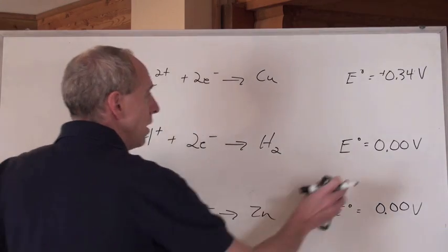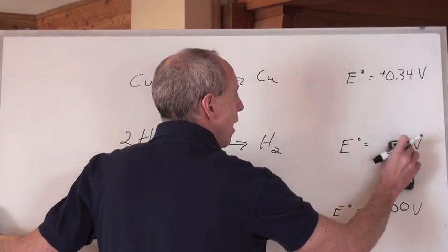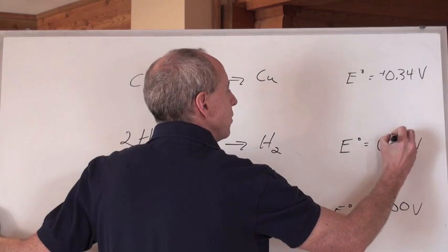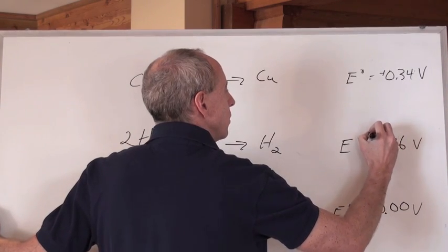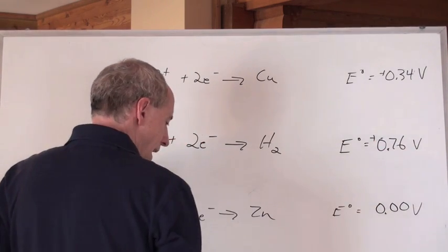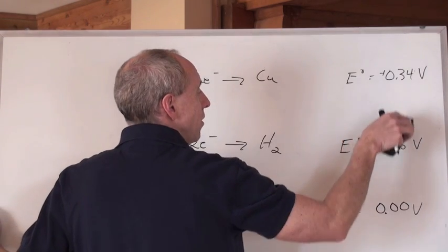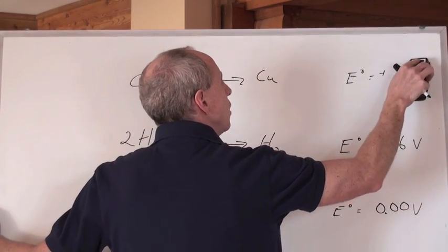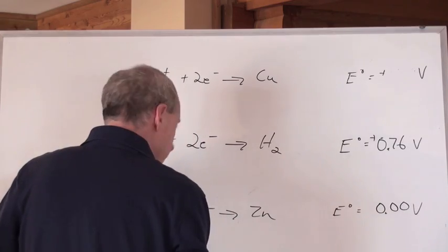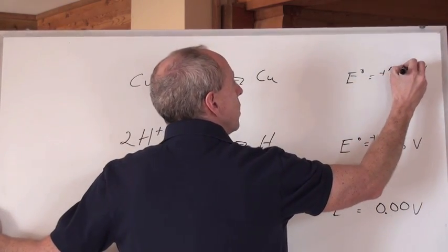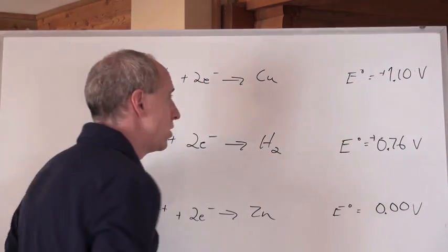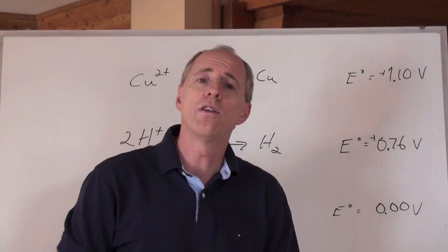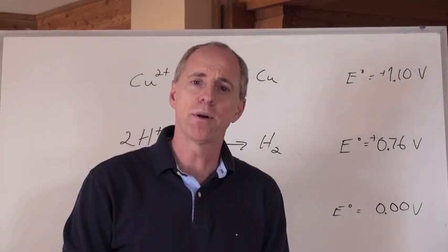then you have to add 0.76 volts to every half reaction to make them their new voltage. So, this one, the hydrogen half reaction, would now become 0.76 positive volts. And, of course, adding that number to this right here, that 0.76, you are going to get 1.10 volts, which is the new voltage for that reduction half reaction for copper.